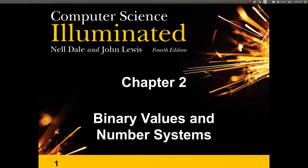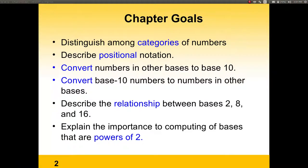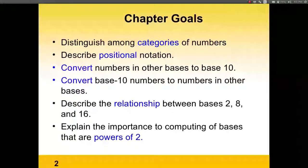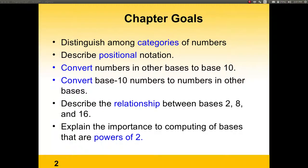In this chapter, we are going to go through binary values and number systems used in computers. The goals of this chapter are to distinguish among the different categories of numbers, and to be able to convert numbers from base 10 into other bases and vice versa. Also, to see the relationship between base 2, 8, and 16, which are powers of 2, and their importance in computer systems.